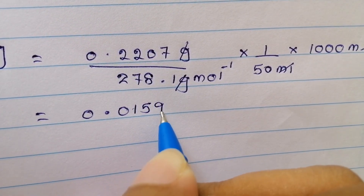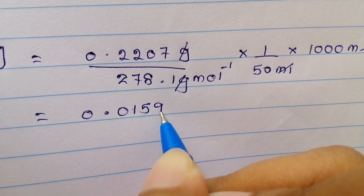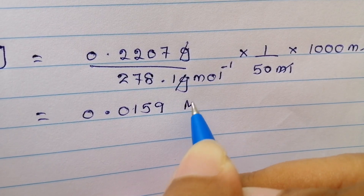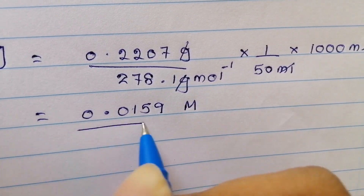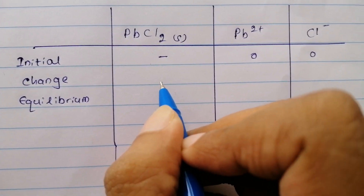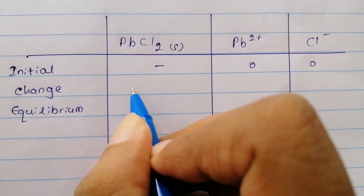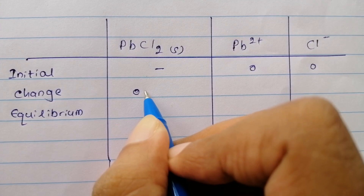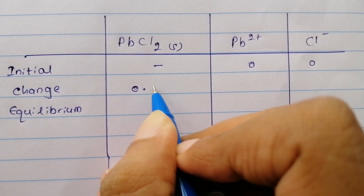We set up a table with lead chloride, lead two-plus ion, and chloride ion. The table has initial concentration, change in concentration, and equilibrium concentration.